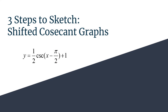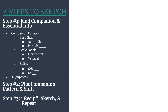Let's do a quick overview of the method. In step one, you find the companion equation and its essential information. The companion for a cosecant graph is a sine graph — the reciprocal function — and we'll build off your knowledge of sine to graph the cosecant. In step two, we plot the companion sine pattern and take care of the shifts. In step three, we create the reciprocal graph, sketch it in, and repeat.